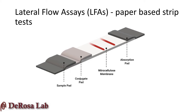As the assay is run, the aptamer will be captured at the test line by immobilized streptavidin molecules through strong interactions with the biotin group covalently linked to the end of the aptamer. The gold nanoparticles are captured at the control line by PDDA, a positively charged polymer, to signal if the test was run properly.